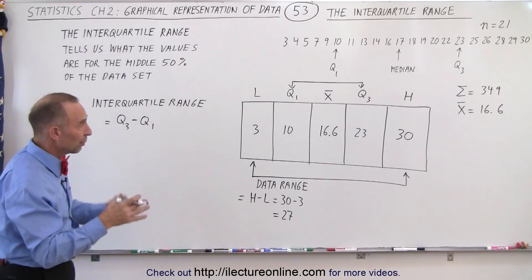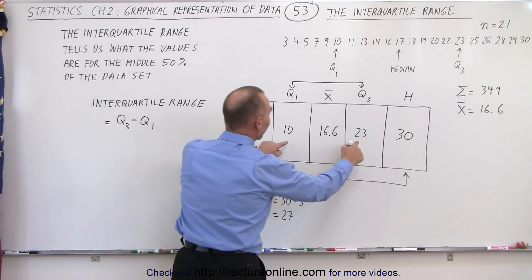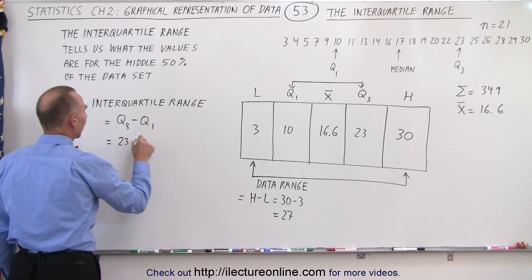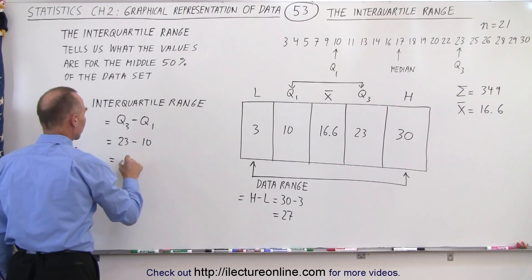So using the same data set we had in the previous video, we simply find the difference between those two values. So this is equal to 23 minus 10, which is equal to 13.